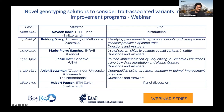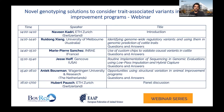The presentations are as follows. The first is from Rudong Xiang, a researcher at the University of Melbourne, Australia, who will talk about identifying genome-wide regulatory variants and using them in genomic prediction of cattle traits. The second talk is from Marie-Pierre Sanchez from INRAE, on the use of custom chips to validate causal variants in cattle. The third talk is about low-pass sequencing with GenCove, given by Jesse Ho, on routine implementation of sequencing genomic evaluations using low-pass imputation and hybrid capture. The last talk is from Anik Bowman at Wageningen University, on opportunities using structural variation in animal improvement programs.